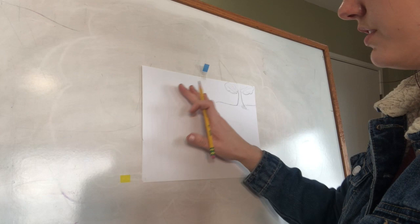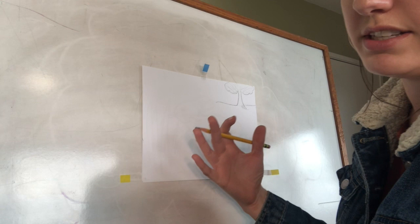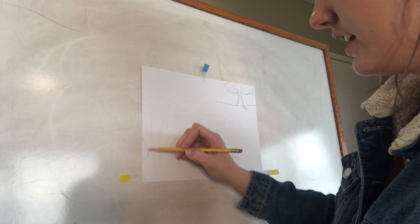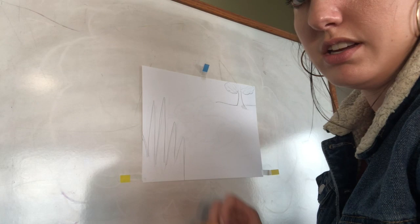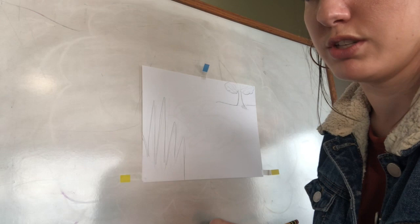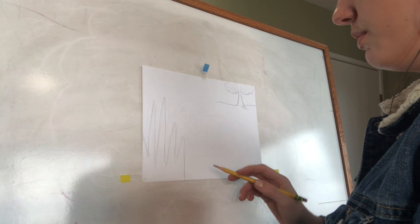That's going to be our background. At the bottom of your paper is the foreground — what we're going to see closest to us. On the foreground, we're going to make it look like we're very close to the grass, so sketch in some big grass, as if we're up close in the grass taking a picture of this rabbit. We'll add a little bit more to the foreground and background later.